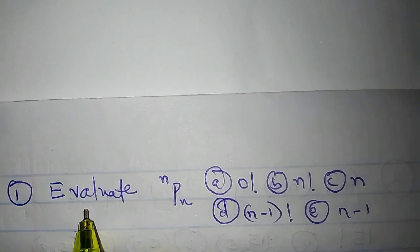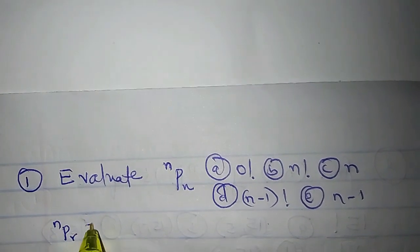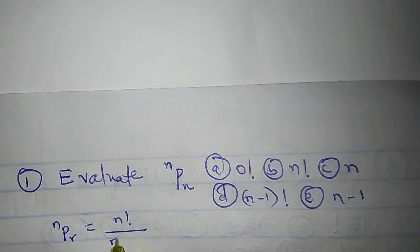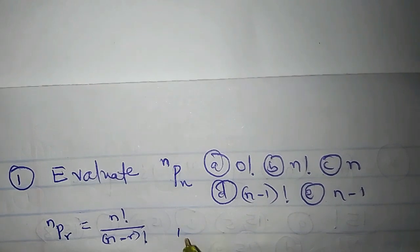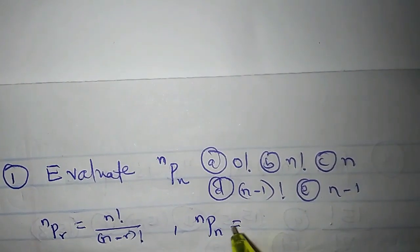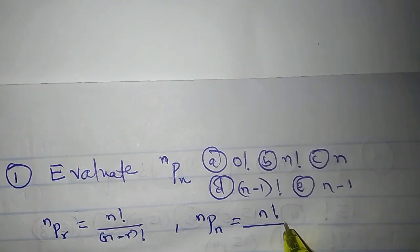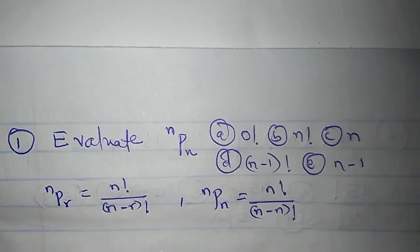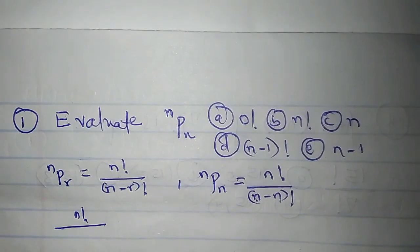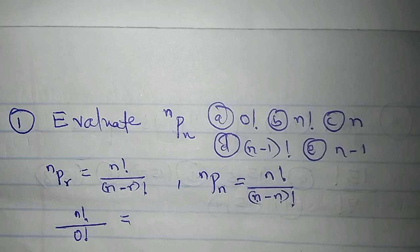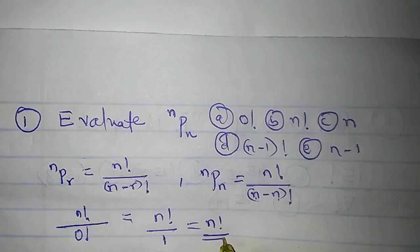The first question says: evaluate nPn. Generally, nPr is equal to n factorial over (n minus r) factorial. So, nPn will have r replaced by n, giving n factorial over (n minus n) factorial. That is n factorial over 0 factorial. Since 0 factorial is 1, we get n factorial over 1, which is n factorial. So the correct option is option B.